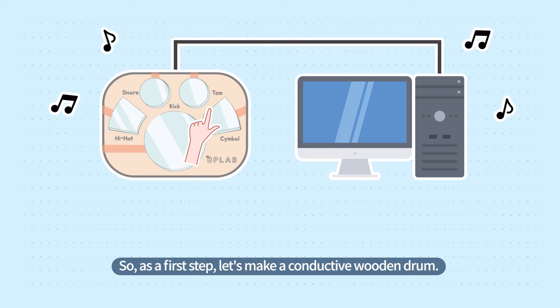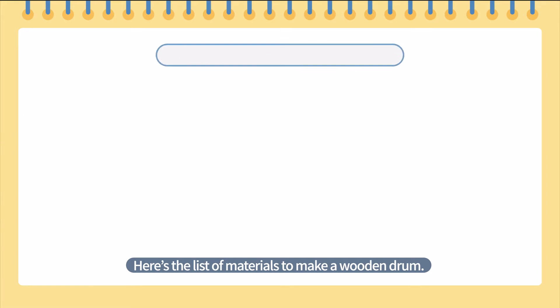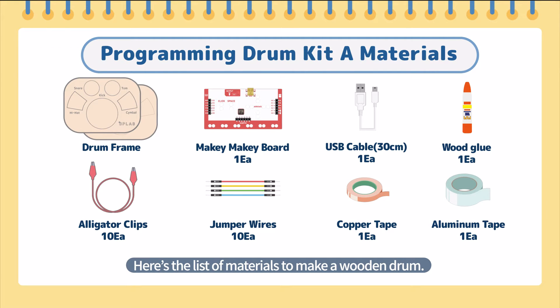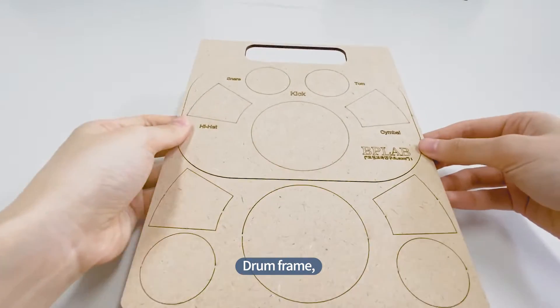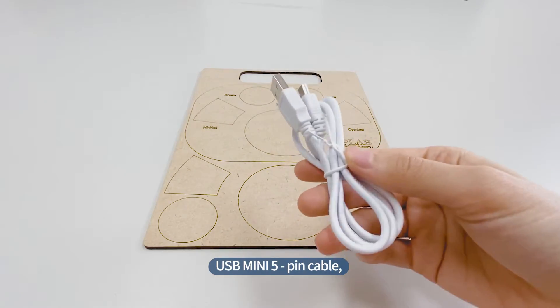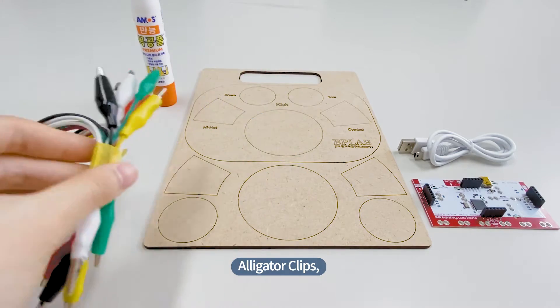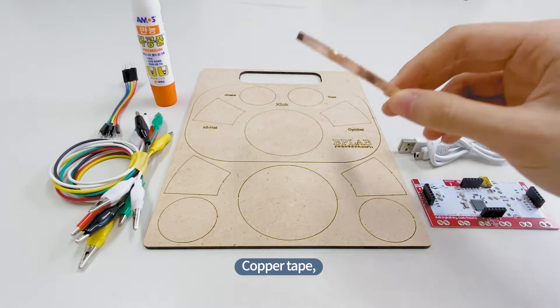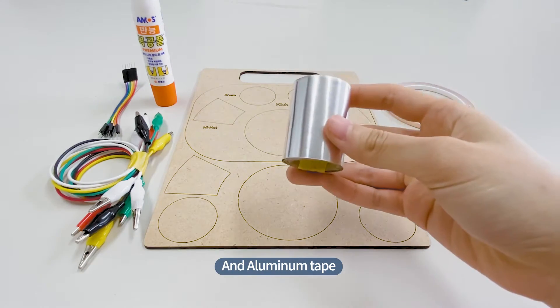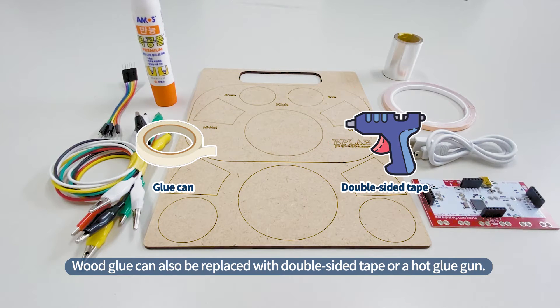So, as a first step, let's make a conductive wooden drum. Here's the list of materials to make a wooden drum: drum frame, makey-makey board, USB mini 5-pin cable, wood glue, alligator clips, jumper wires, copper tape, and aluminum tape. Wood glue can also be replaced with double-sided tape or a hot glue gun.